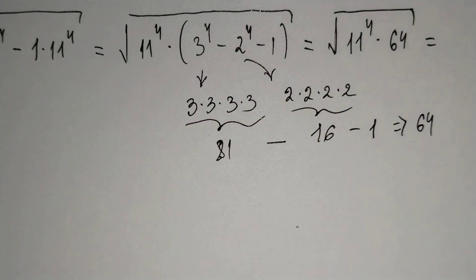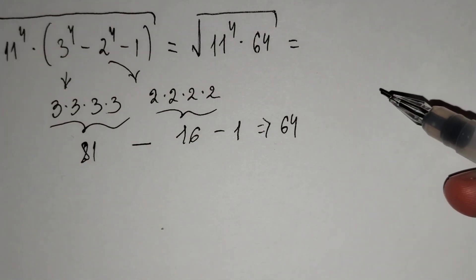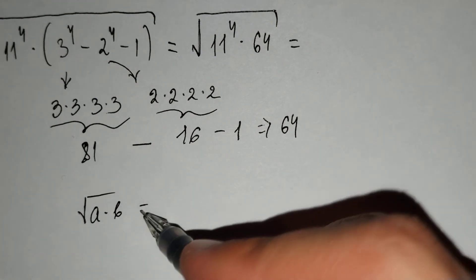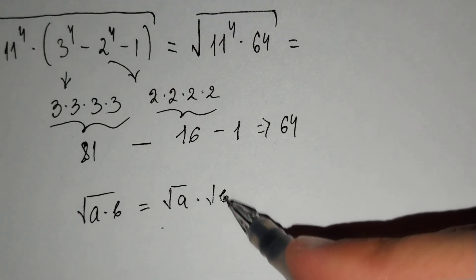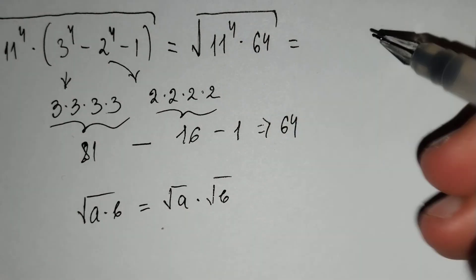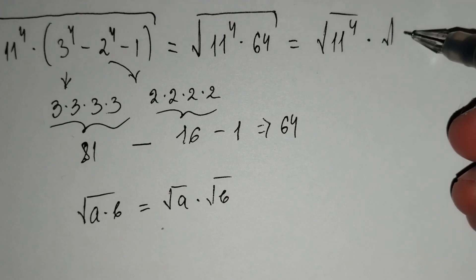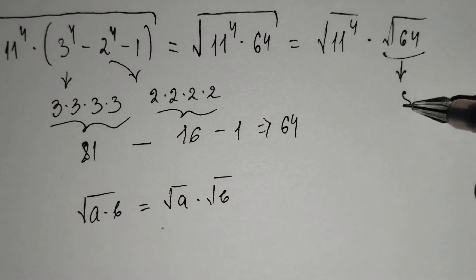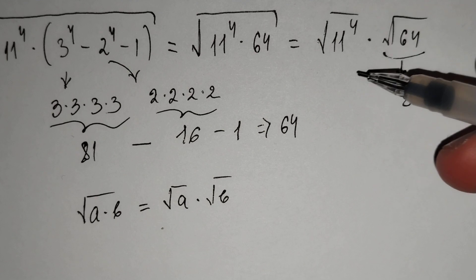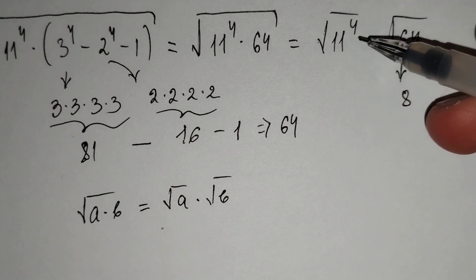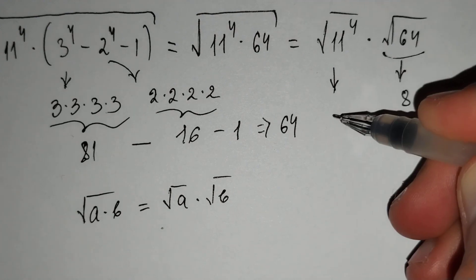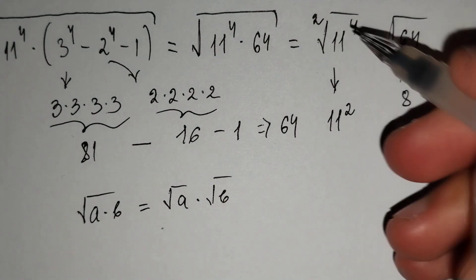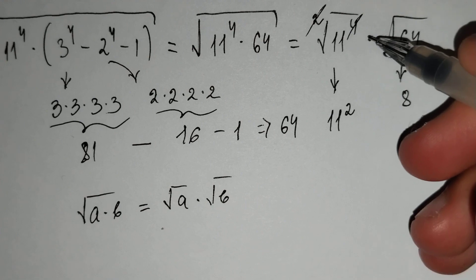Let's put 64 here: the square root of 11 to the power 4 times 64. We should use the formula: the square root of a times b equals the square root of a times the square root of b. Using this formula, this equals the square root of 11 to the power 4 times the square root of 64. The square root of 64 equals 8, because 8 squared equals 64. And the square root of 11 to the power 4 equals 11 to the power 2, because the exponents 2 and 4 cancel, leaving 2.